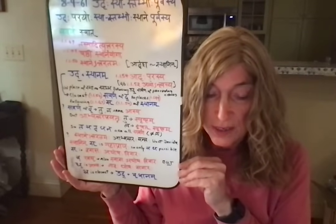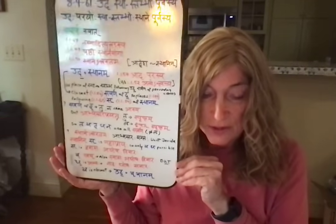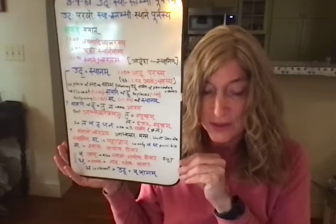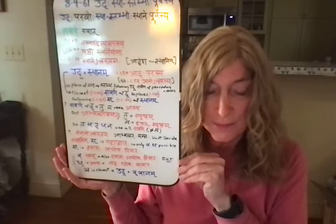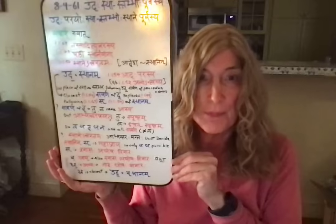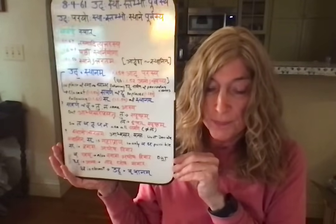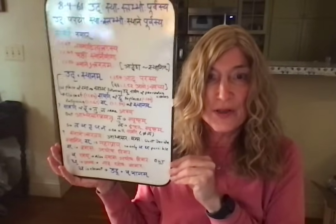So the winner, at the bottom of the line, is tha — tha is the closest savarṇa of da to the si of sthānam. So the replacement is tha, and the next step in the sandhi, which is where we're stopping, is ut plus tha — utthanam. So there you go: utthanam.